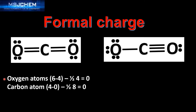Let's start by calculating the formal charge for the two oxygen atoms in the left structure. We have six — the number of valence electrons in an oxygen atom — minus four, the number of non-bonding electrons, minus half the number of bonding electrons. Here we have a double bond composed of four shared electrons. So: six minus four minus half of four, which is two, gives us a formal charge on both oxygen atoms of zero.